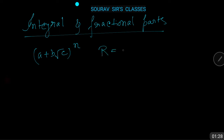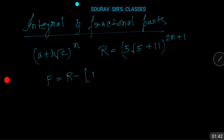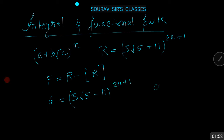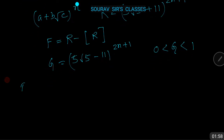Let capital R equal (5√5 + 11)^(2n+1). Let capital F be its fractional part, that is F = R - [R]. Let g = (5√5 - 11)^(2n+1). Clearly 0 < g < 1. Now R minus g equals (5√5 + 11)^(2n+1) minus (5√5 - 11)^(2n+1).